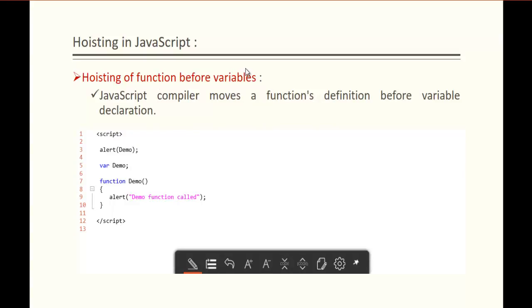Hoisting of function before variables. The JavaScript compiler moves a function definition before variable declaration. I have a function demo and also a variable demo. Before that, I have an alert function with demo passed to it. When I execute this, the Hoisting concept will first look into the function, not the variable. Since I am passing demo without parentheses, the output I will get is the function definition — not the variable value. JavaScript compiler gives first priority to the function definition, not the variable.